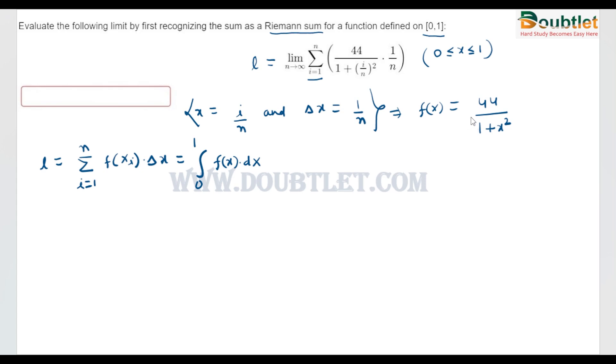And 1/n we can write it as del x, so we will write it as 44 divided by (1 + x²) dx, and the limit will be from 0 to 1.